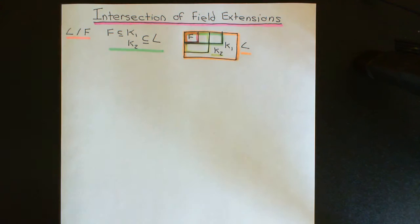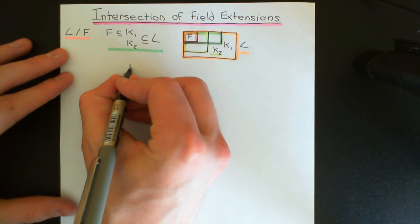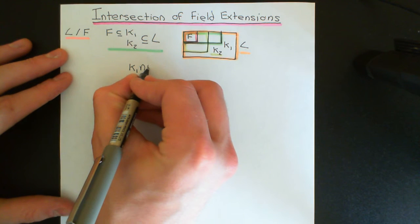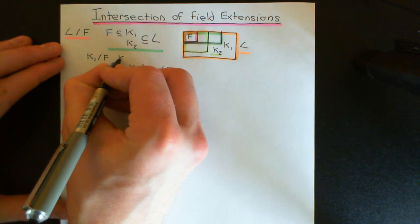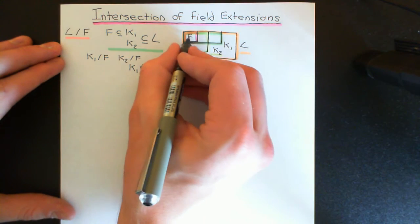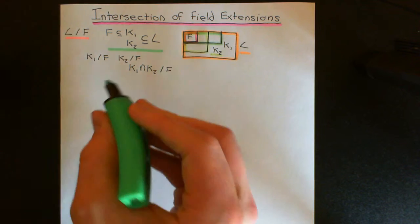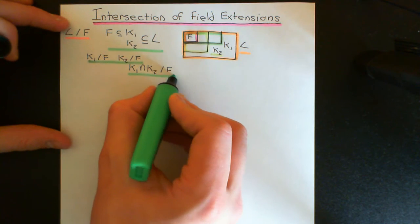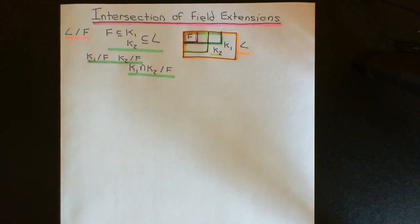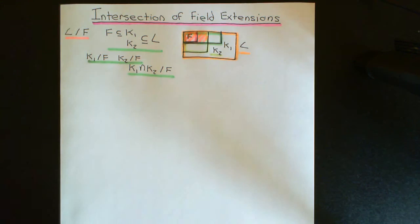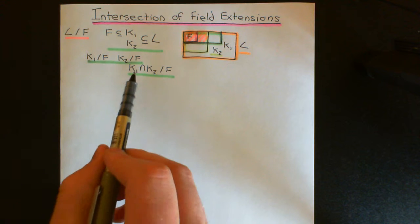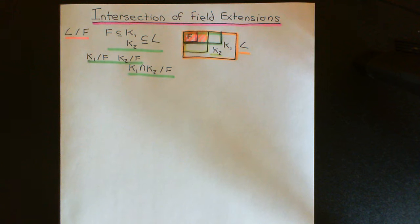We've got these two different intermediate fields in between the smallest field F and the largest field L, and the claim is that if you look at the intersection of these two, K1 intersect K2, that is a field extension of F. K1 is a field extension of F, and K2 is obviously a field extension of F as well. On this picture, K1 intersect K2 is all the portion highlighted in red — the bit that's both in K1 and in K2.